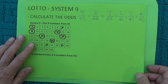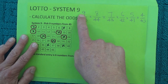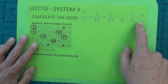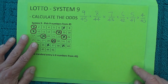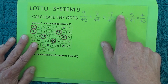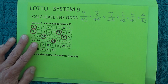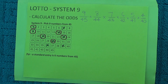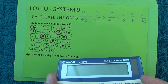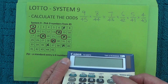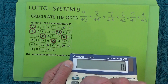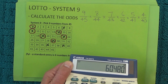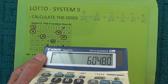Now all you have to do to calculate the odds is do some multiplication. First, multiply across the top row of those fractions, then multiply across the bottom row. So it's 9 × 8 × 7 × 6 × 5 × 4 for the first calculation. I'll punch those into the calculator: 9 × 8 × 7 × 6 × 5 × 4 equals 60,480.